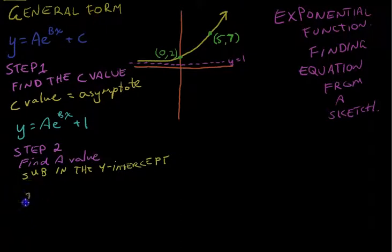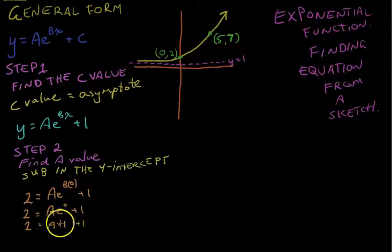So we're going to end up with 2 equals Ae to the B times 0 plus 1. What happens here is that e to the power of B times 0 - anything times 0 is 0. So we end up with Ae to the 0 plus 1. That's eliminated our B value and just left the A value there. Anything to the power of 0 is always 1. So that's 2 equals A times 1 plus 1. A times 1 is just A.